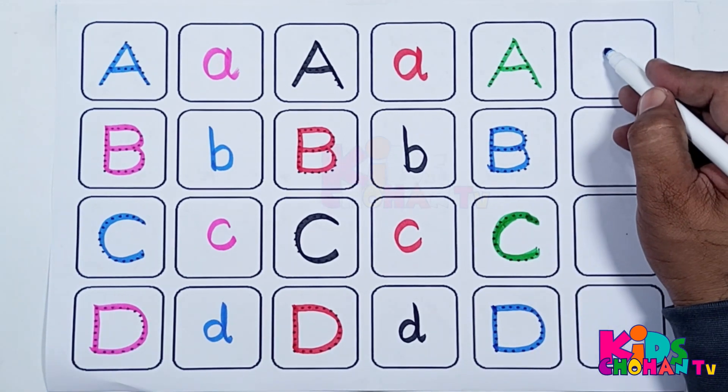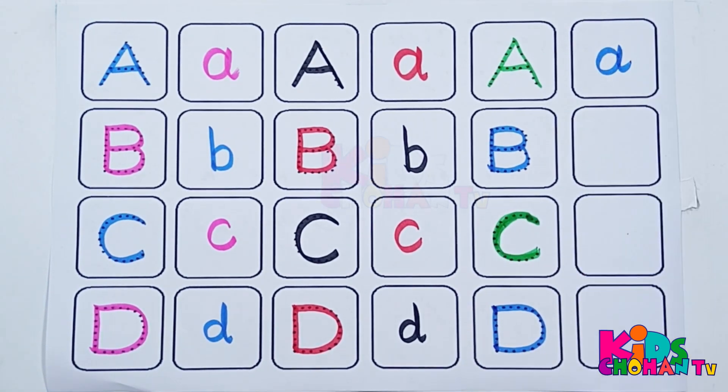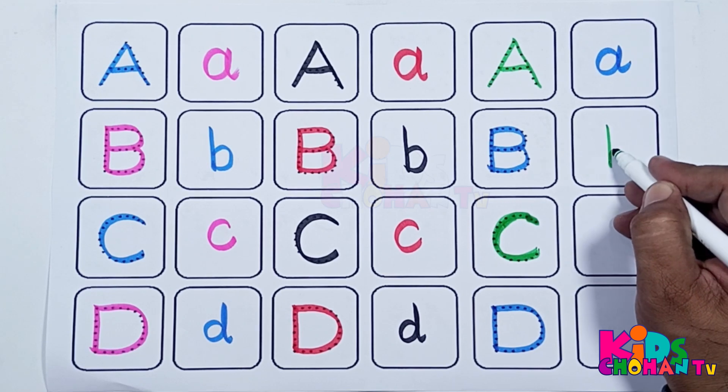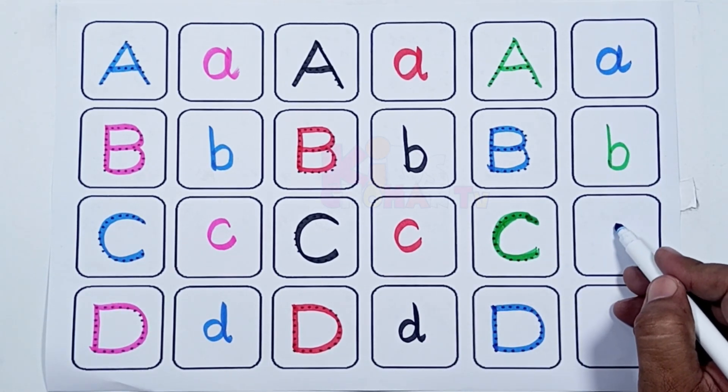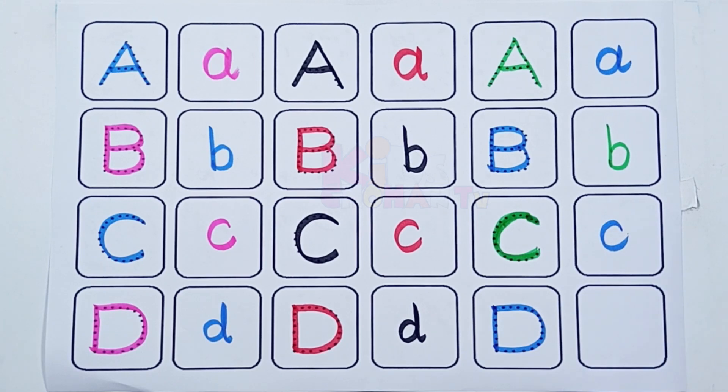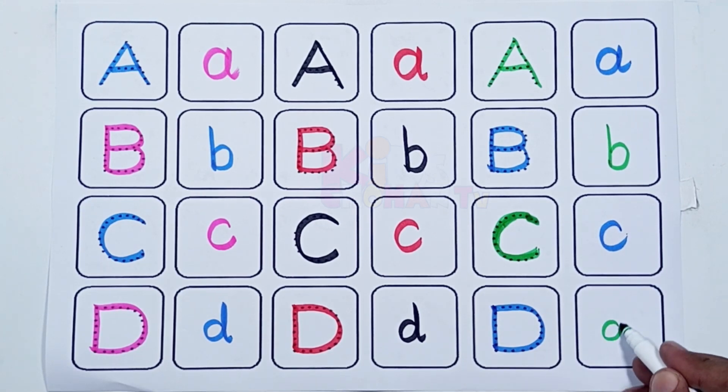This is letter A. Now we are tracing letter B. This is letter C. This is letter D.